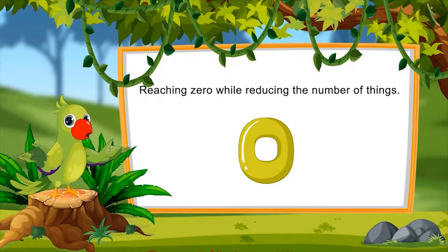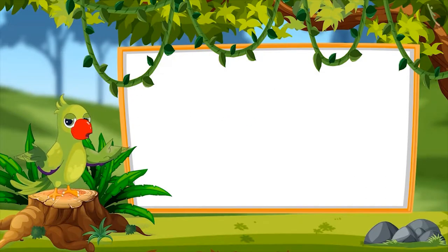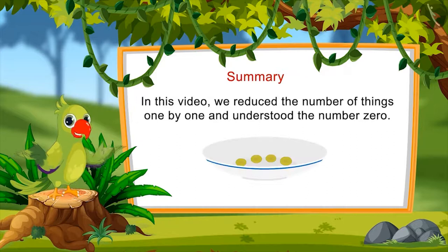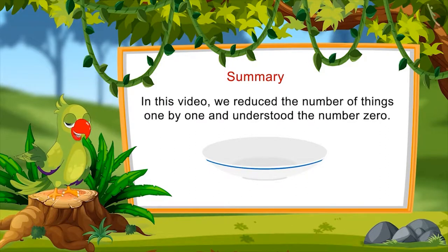Look at the number of things around you and reduce their number one by one until you reach the number zero. Children, that was all for today. In this video we reduced the number of things one by one and understood the number zero. See you soon in our next video — till then, goodbye children!